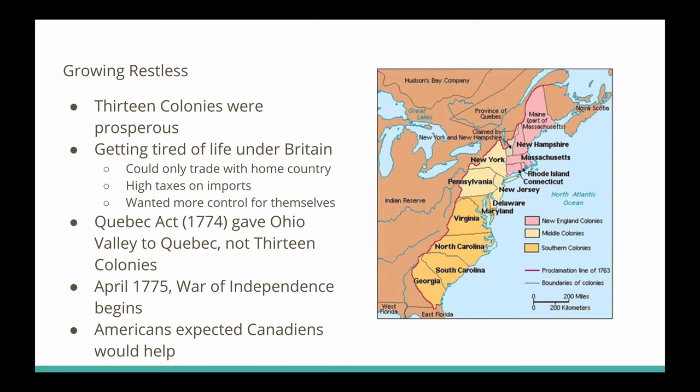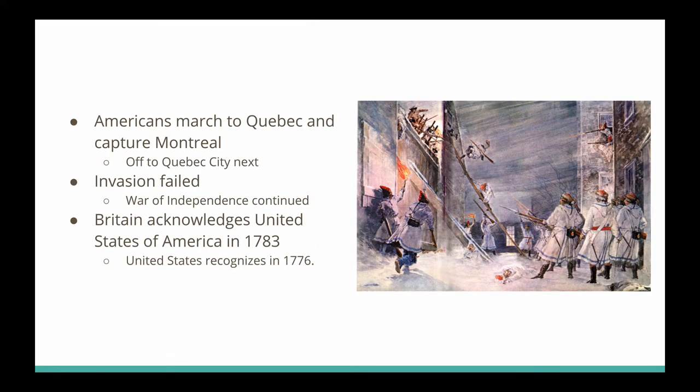In April of 1775, the war of independence begins. The Americans expected the Canadiens would help them. So they marched to Quebec and captured Montreal, seeing themselves as liberators of the Canadiens. They were next up Quebec City — but the invasion of Quebec City failed. The narrow and maze-like streets of Quebec City didn't lead to victory for these American invaders.